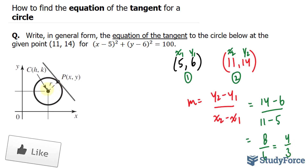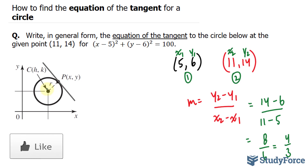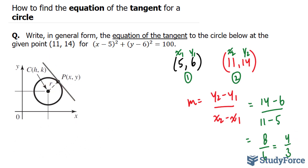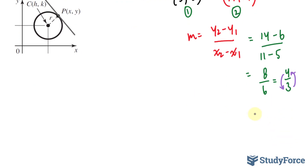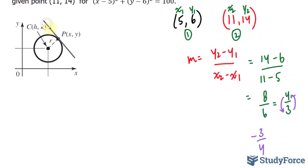Like I said earlier, to find the slope of the tangent line, I need to take the negative reciprocal of this number. To do that, I will flip this fraction and change its sign from currently positive to negative. So negative 3 over 4 will serve as the slope of the tangent line.